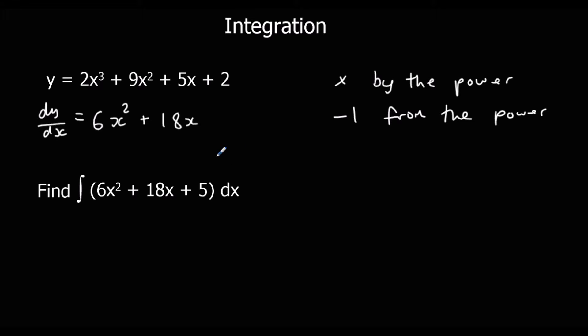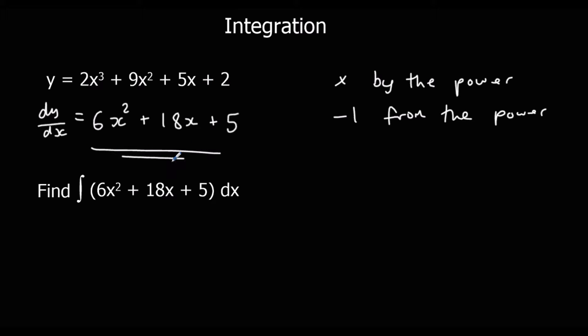x by itself means x to the power of 1. For 5x, we've got the power of 1, so 1 times 5 is 5. We take 1 off the power — that goes down to x to the power of 0 — and we don't have to write x to the power of 0 because anything to the power of 0 is 1. And the 2 here, think of it as 2x to the power of 0; if you multiply by 0, it's going to disappear. So the 2 is going to completely disappear, and this is our differentiated answer.